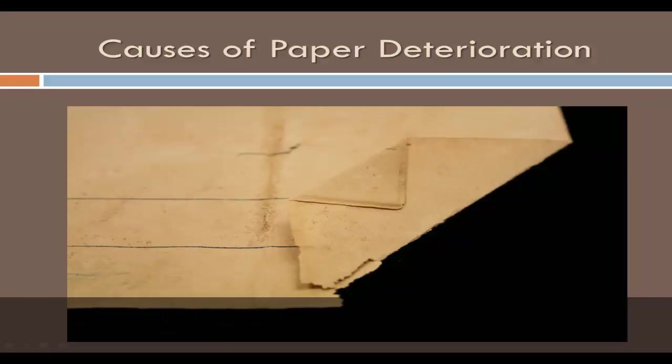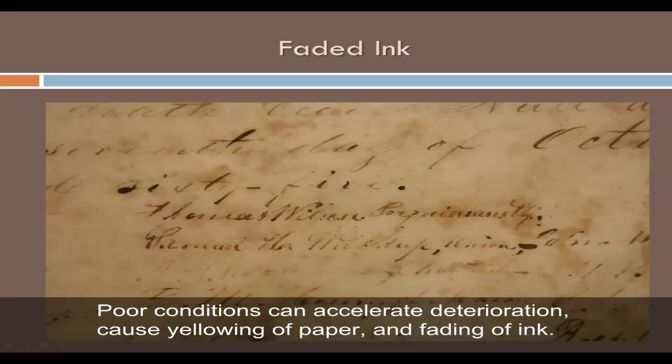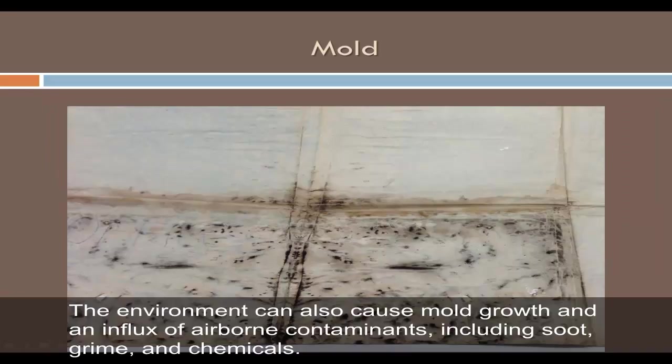Environmental conditions can play a strong role in paper preservation. Poor conditions can accelerate deterioration, cause yellowing of paper, and fading of ink. The environment can also cause mold growth and an influx of airborne contaminants, including soot, grime, and chemicals.